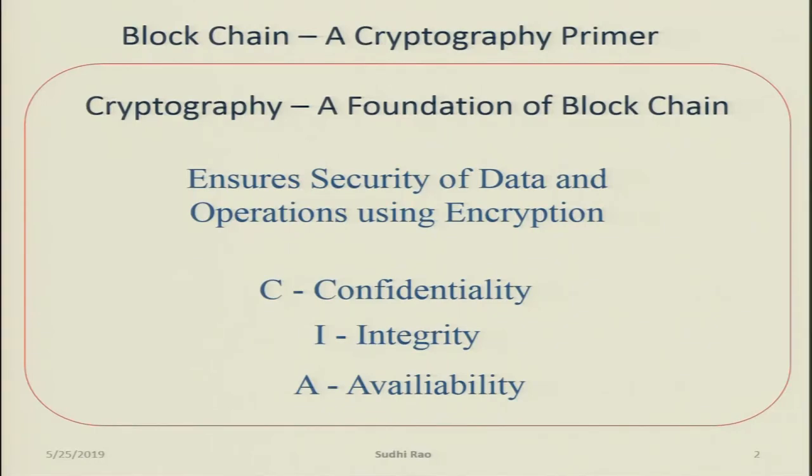The third part is availability. If I send you a message and your system is down, or somebody has hacked into your system, it is no longer available. For example, if I am running an e-commerce site and a hacker has brought my site down on the day I announced a special deal, it affects my business and security. This is called the security triad — Confidentiality, Integrity, and Availability — conveniently forming the acronym CIA. Cryptography also has to ensure all three: confidentiality, integrity, and availability of data and operations using encryption.